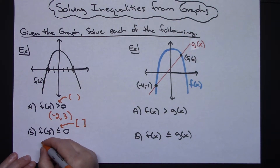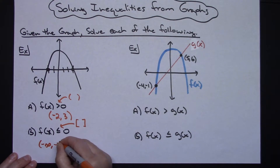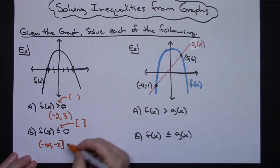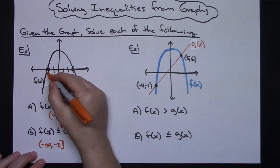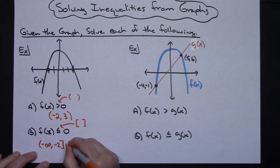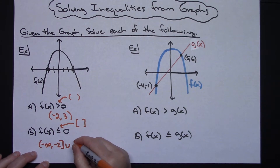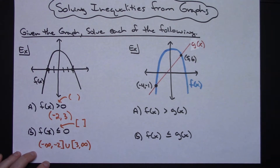The answer would be from negative infinity all the way up to negative 2 — and I want to include that negative 2 because right at negative 2 it is equal to zero, so square bracket. Then we jump over and do this section: square bracket 3 all the way up to positive infinity.